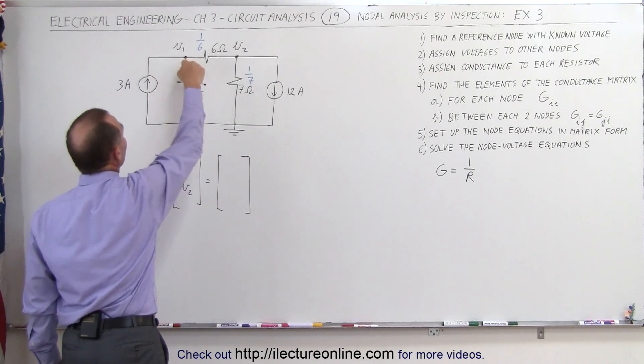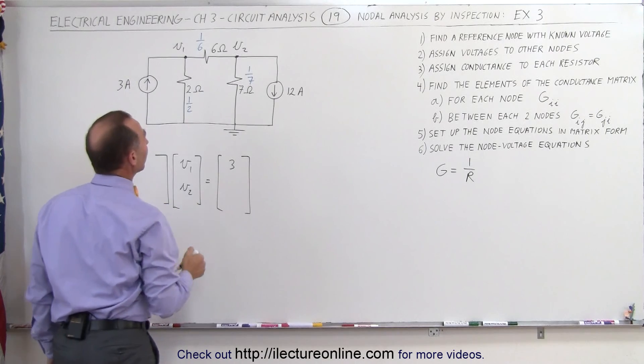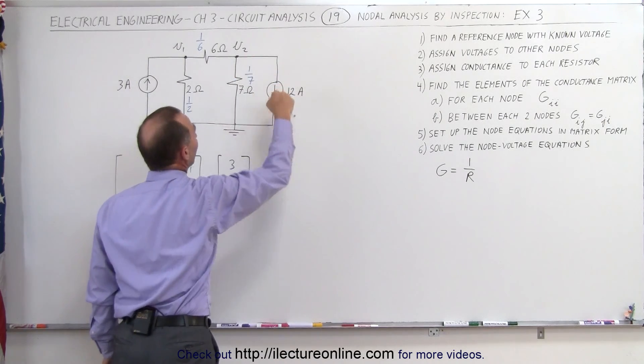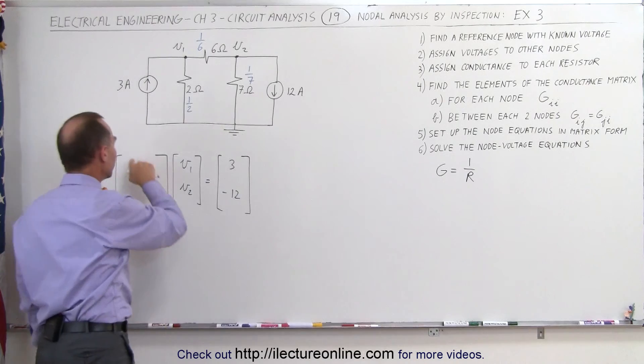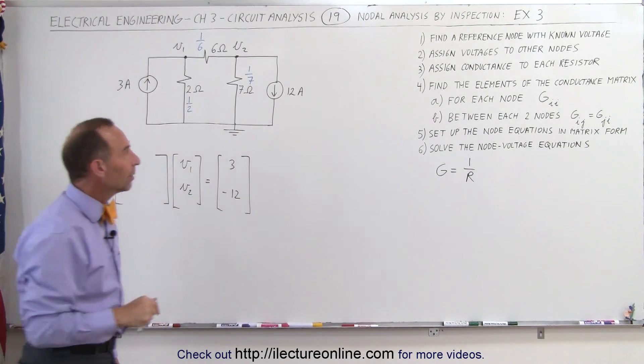V1 we can see that the 3A current enters, so we plug in 3 there. For V2 we can see that 12A leaves, we write minus 12 there. All we need to do now is find these elements.